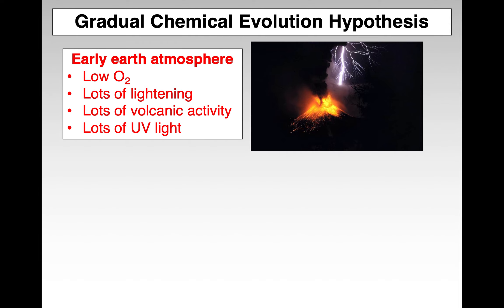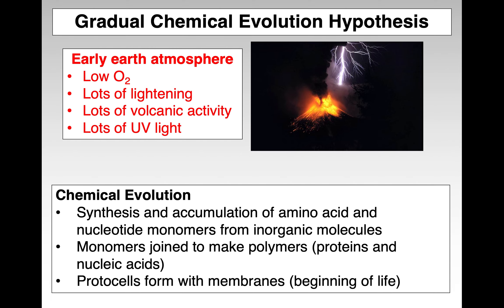The gradual chemical evolutionary hypothesis states that the early earth environment or atmosphere was very hostile — low oxygen, lots of lightning, lots of volcanic activity, and lots of UV light. There was some sort of chemical evolution: synthesis and accumulation of amino acids and nucleotide monomers from inorganic molecules. The monomers then could make polymers, probably through dehydration synthesis reactions. Eventually that led to the very beginning of life — the first protocell — where we had a membrane separating that cell from its environment.